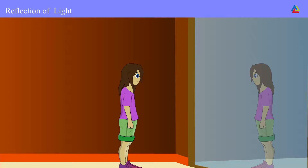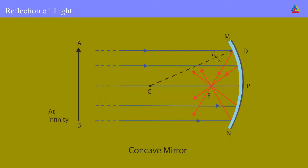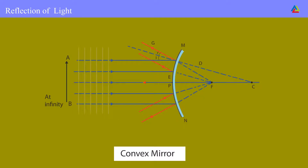A spherical mirror, which is considered part of the surface of a sphere, also forms images. Spherical mirrors are of two types: one, a concave mirror, whose reflecting surface is curved inwards, and two, a convex mirror, whose reflecting surface is curved outwards. Let's study some terms associated with spherical mirrors.